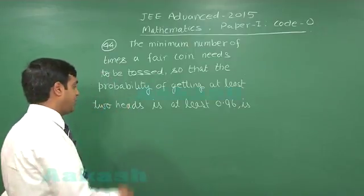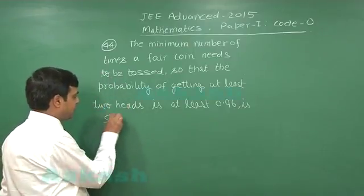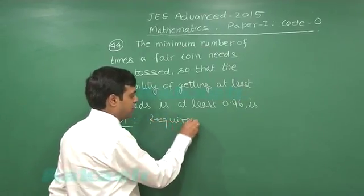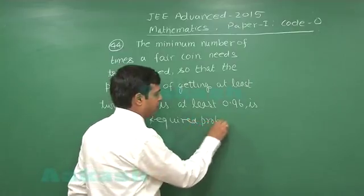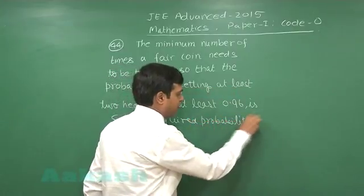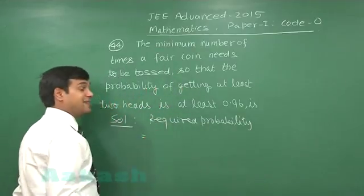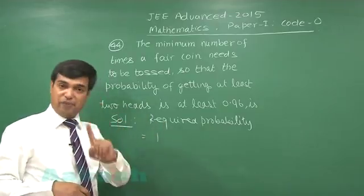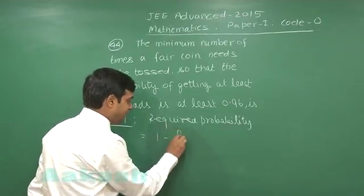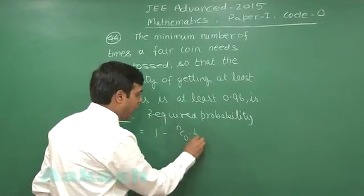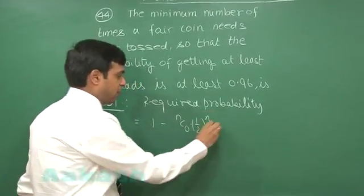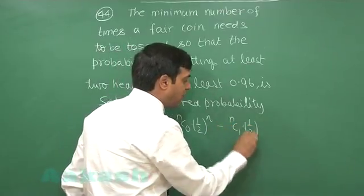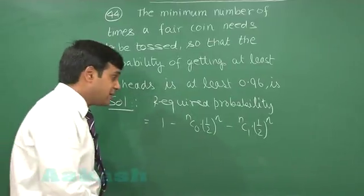Starting with the required probability. This is 1 minus no heads or exactly one head. So 1 minus no heads, that is nC0 times (1/2)^n, plus exactly one head, nC1 times (1/2)^n. This is the required probability.